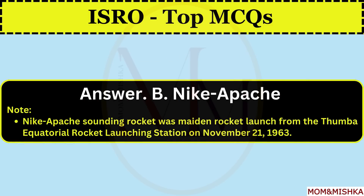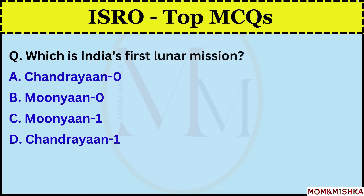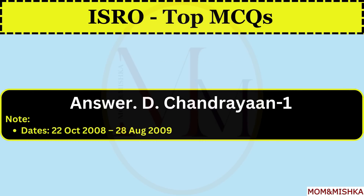What was the name of the first rocket launched from Thumba? Nike Apache, option B. The Nike Apache sounding rocket was launched from the Thumba Equatorial Rocket Launching Station on 21 November 1963. Which is India's first lunar mission? Chandrayaan 1, option D. It was launched on 22 October 2008 and was live till 28 August 2009.